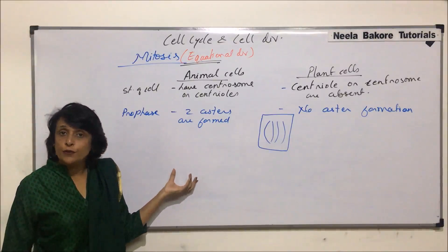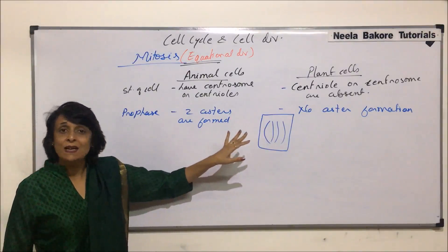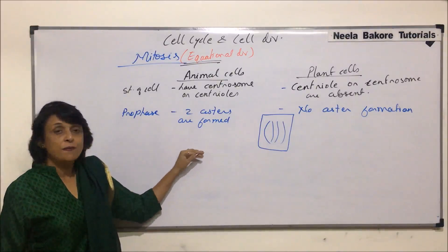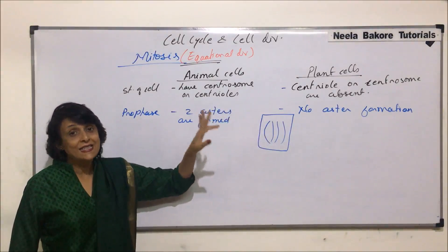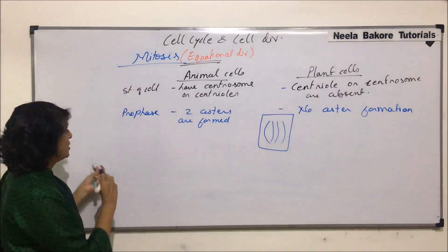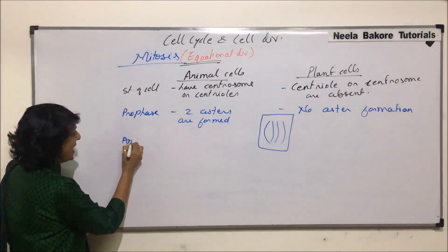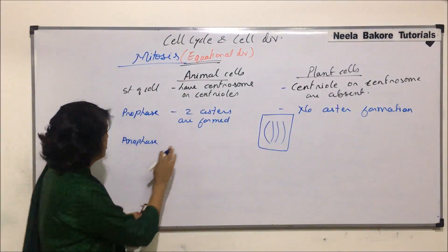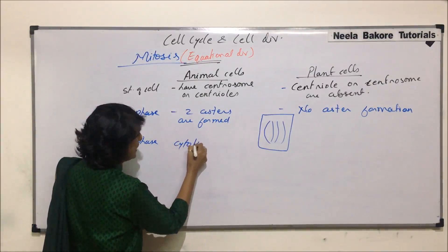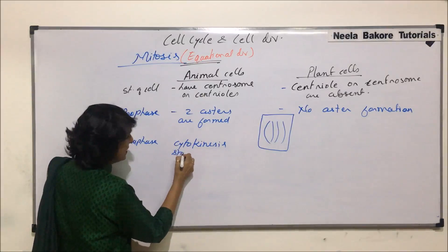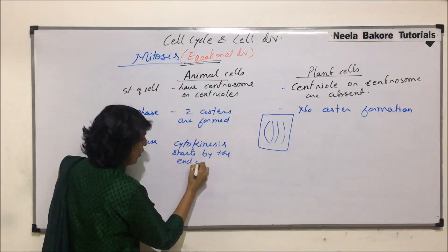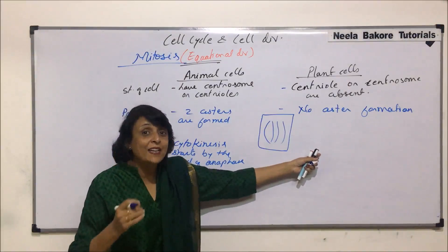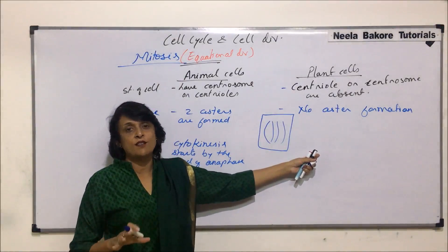In metaphase, there is no difference between animal and plant cells — chromosomes align on the equatorial plane in both. In anaphase, spindle fibers contract pulling chromosomes apart, which is also the same. One notable difference is that in animal cells, cytokinesis begins by the end of anaphase.